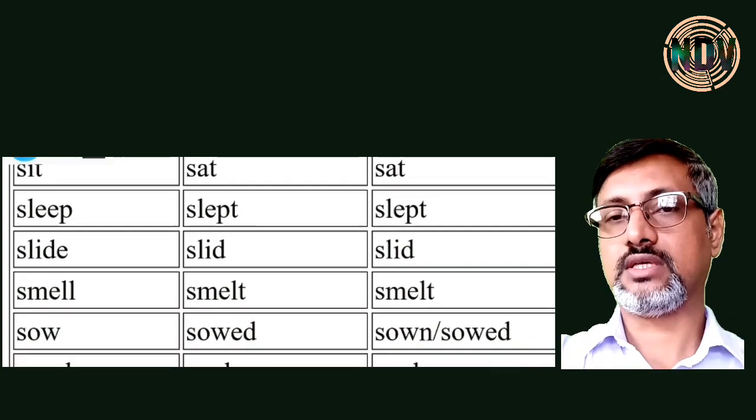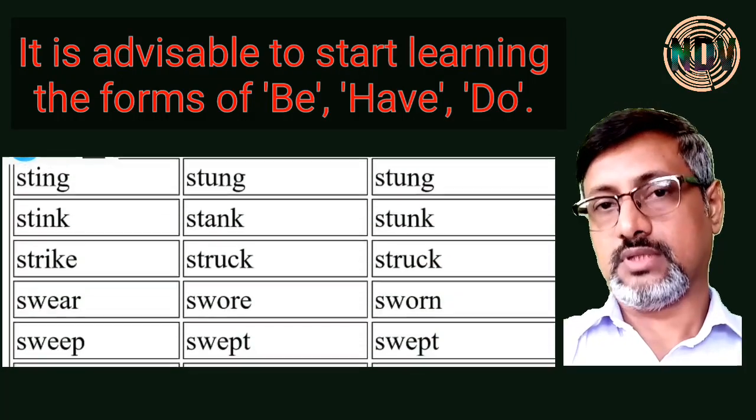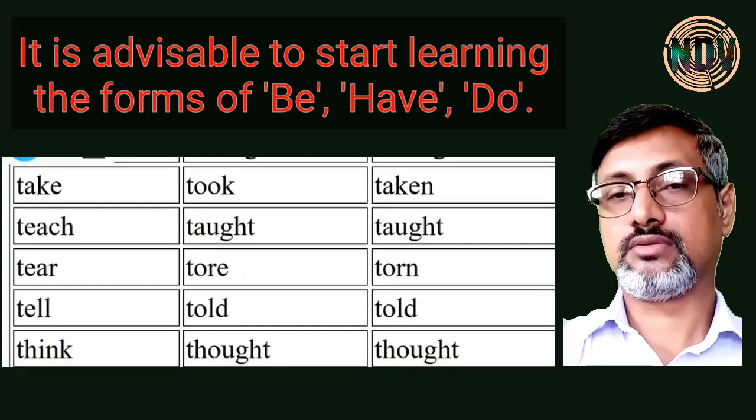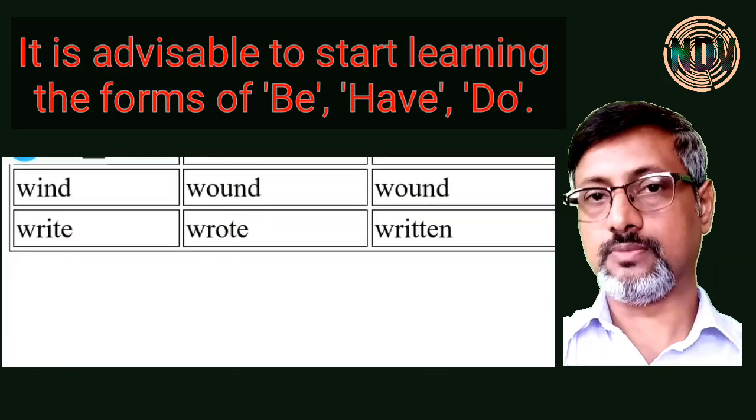A list will appear on the screen — you can see it. To start with, I would always suggest my students and learners of English to learn these three verbs and their forms first: be, have, and do. Because these are the three most frequently used verbs. Be verb is used in making different tenses and various voices. We use 'have' very frequently, and 'do' is also a very important verb. Please learn these verb forms by heart — it will help you in future, and while talking and writing there won't be any mistakes.